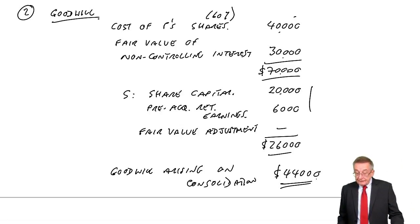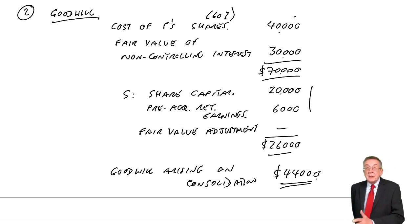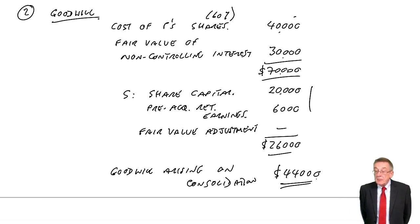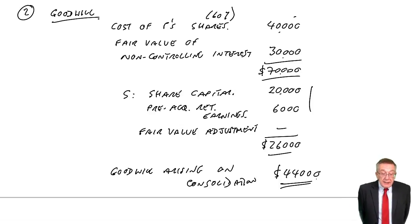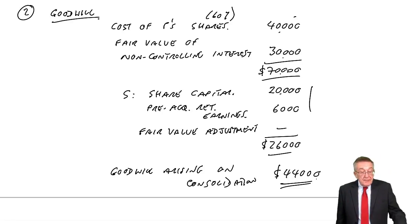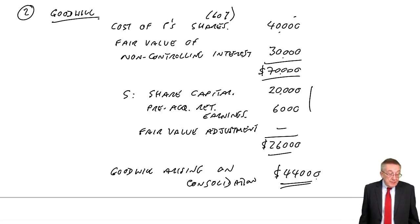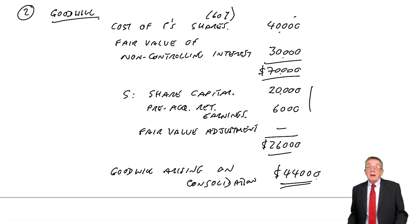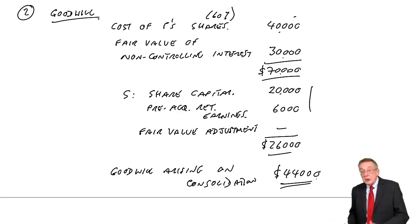There's the first bit — the full workings for goodwill. Now looking at example three, another bit we need to calculate: what was the non-controlling interest at 31st December 2010? Remember, we're going to prepare a consolidated statement at December 2010. We've got the goodwill figure, but we also need this non-controlling interest.